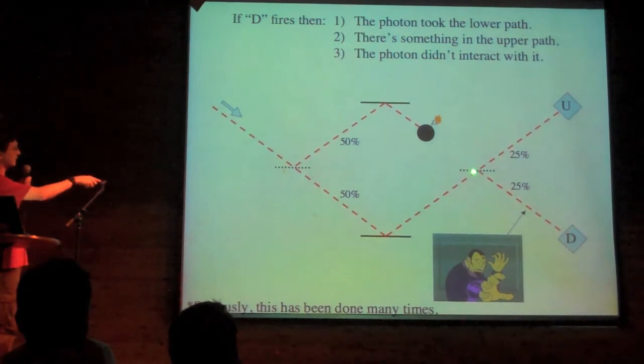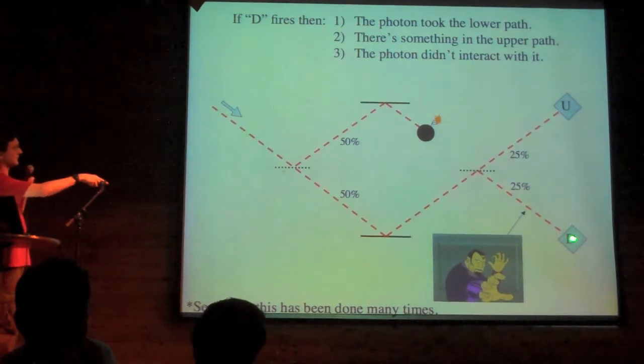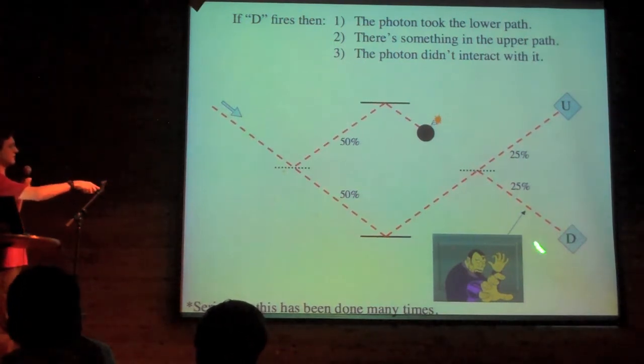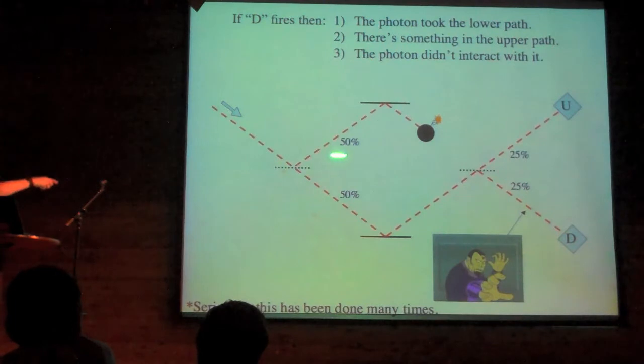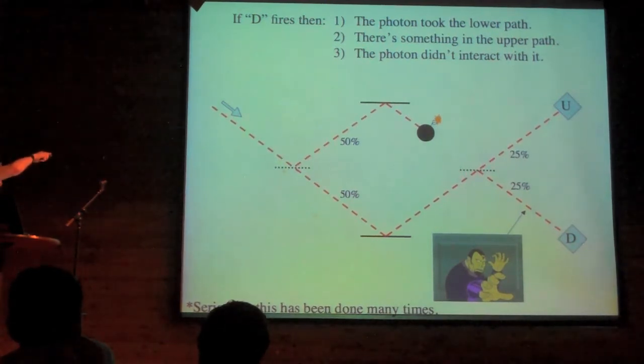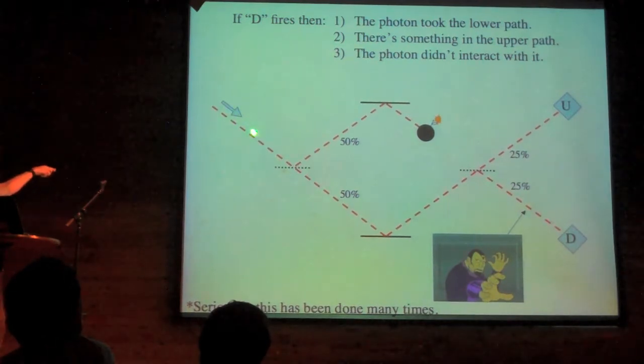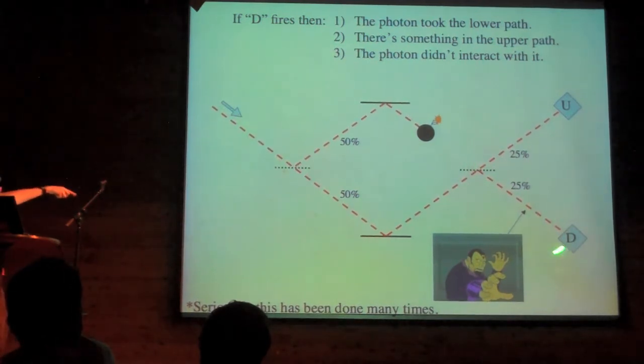Half the time, it's going to take the lower path, and since there's no interference, there's nothing coming from this direction to interfere with it, it makes another 50-50 decision. If you detect it down here, that means it must have taken the lower path. If it took the other path, it would have stopped. There's something in the upper path, which means there's nothing to interfere with, which means it has the chance to go down here.